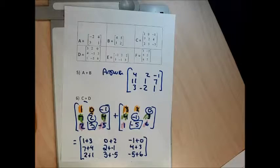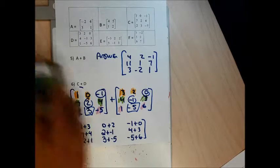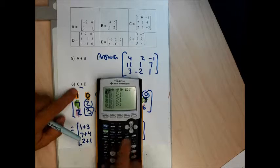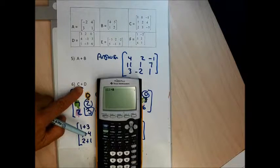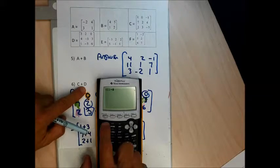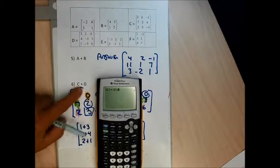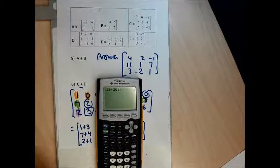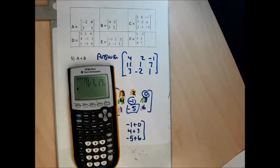That's my answer. Let me double check on my calculator. To do this, I go second matrix, stay in names, get C highlighted, hit enter, then type the plus key. Then second matrix, go down to D, hit enter. When I hit enter I get 4, 2, negative 1, 11, 1, 7, 3, negative 2, 1. Feels perfect.